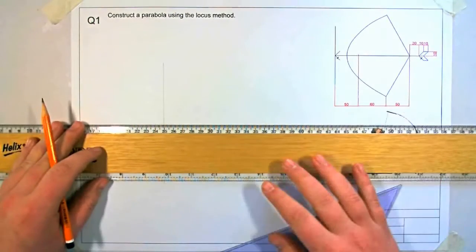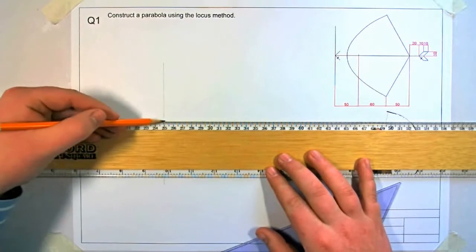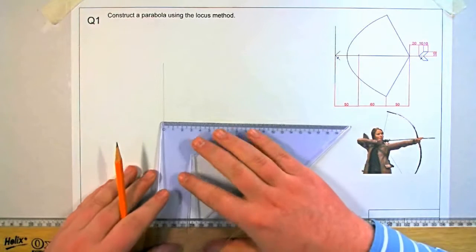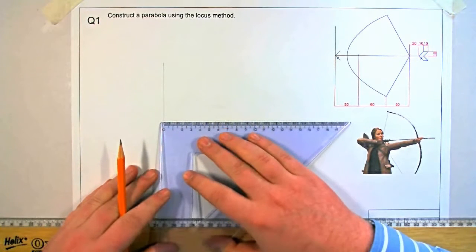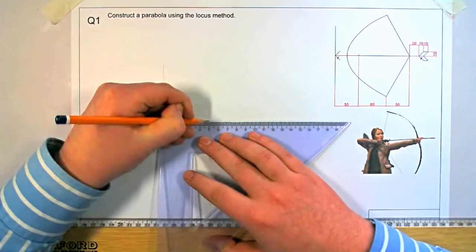Now with the directrix drawn we draw a line perpendicular to it. The focal point is 50mm from the directrix. So we measure out 50mm like so.